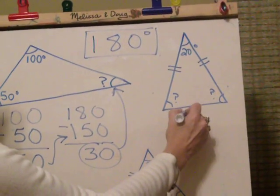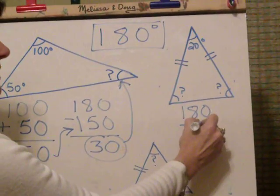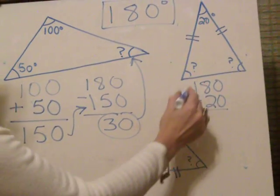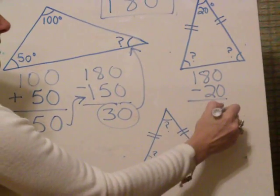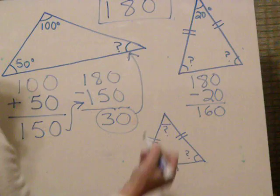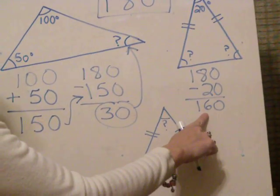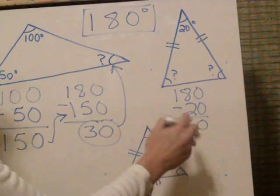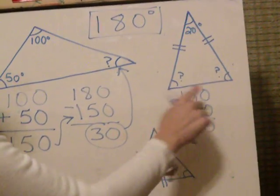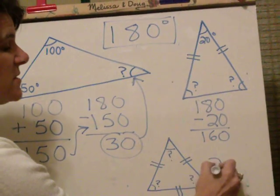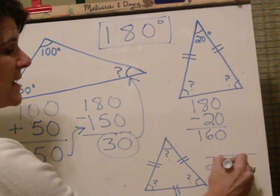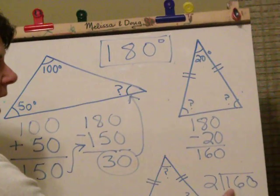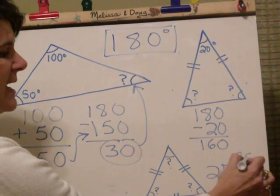I'm going to subtract from 180 the angle we know, which is 20. 180 minus 20 is 160. This 160 is split equally between the two equal angles. So to figure out what each of them are, I'm going to divide 160 exactly in half. Half of 160 is 80.